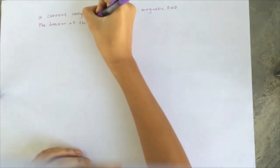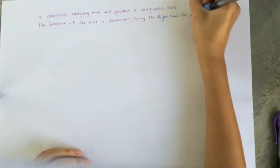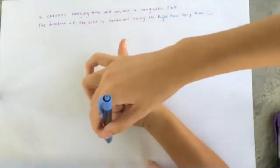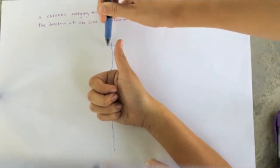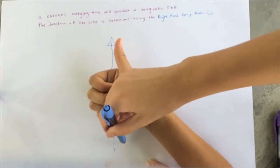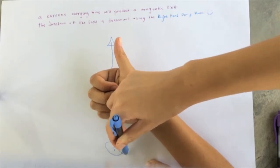A current-carrying wire will produce a magnetic field. The direction of the field is determined using the right-hand grip rule. Here is our right hand. The thumb points in the direction of the current, and the other fingers give the direction of the magnetic field around the wire.